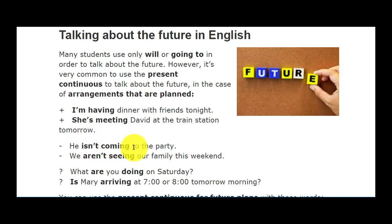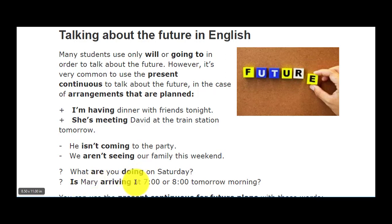Negative form mein: 'He isn't coming to the party' — usne yeh tae kar liya hai ke woh party mein nahi aa raha. 'We aren't seeing our family this weekend' — is weekend par hamari family se milne ka plan nahi hai.